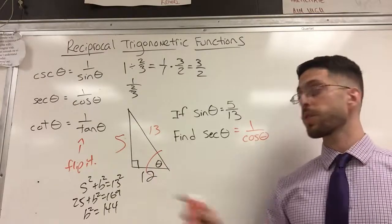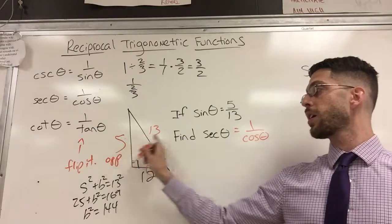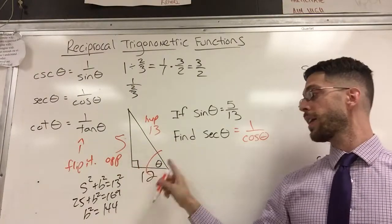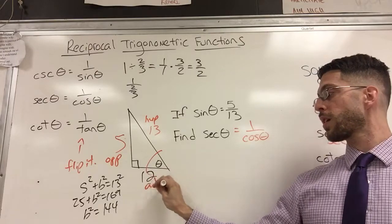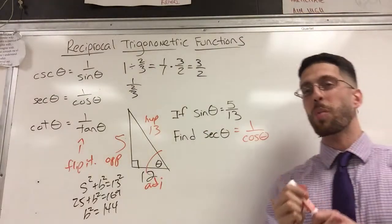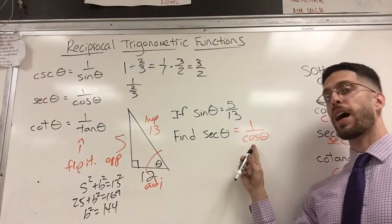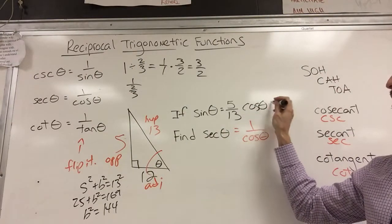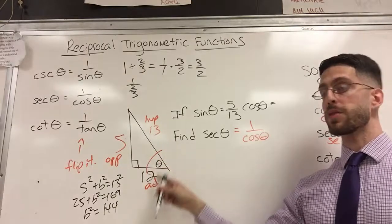Now, if you're labeling your sides, if this is theta, there's opposite over there. Here's hypotenuse, of course, the longest side opposite the right angle. And next to my theta is adjacent. So if I was curious and nobody asked me this, well actually, I need to know it first. The cosine of theta is 12 over 13.